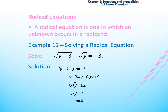Let's move to another example: how to solve radical equations. A radical equation is one in which the unknown occurs in a radicand. Let's solve: root of (y minus 3) minus root y equal to negative 3. We move root y to the right-hand side by adding root y to both sides, to get root of (y minus 3) equal to root y minus 3.